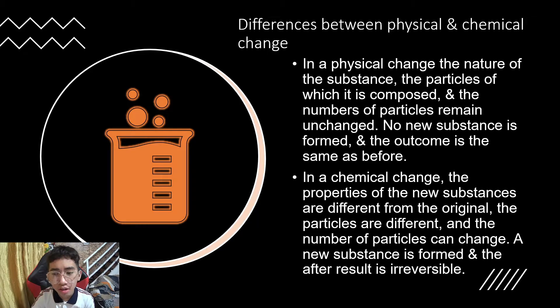In a chemical change, the properties of the new substances are different from the original. The particles are different and the number of particles can change. A new substance is formed and the result is irreversible.